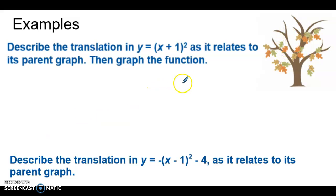All right, we have this example. Describe the translation for this graph as it relates to the parent graph. And then we have to graph it. Well, the parent graph would just be the y equals the x squared without any other numbers. We have a plus one. We do the opposite of the sign. So the translation that happens here is that it moves it left one.